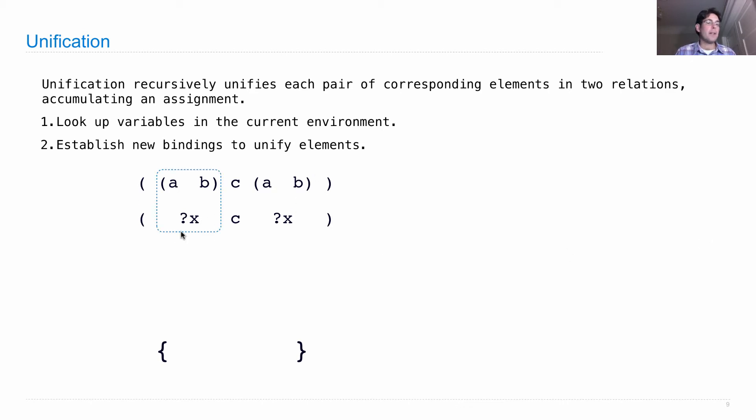So it looks up the variables in the current environment. I'll write the environment down here as a Python dictionary. So far, x is not bound to anything, so looking up has no effect. And then what we do is establish a new binding, meaning x is a, b. It would make these two things the same.